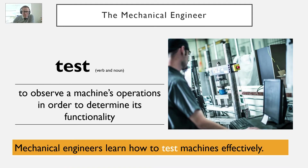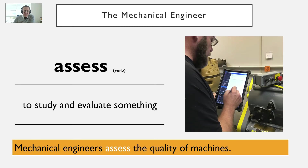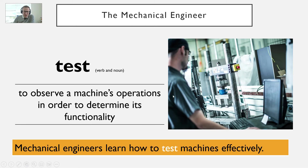Test. This can be a verb and a noun. It means to observe a machine's operations in order to determine its functionality. This is a bit more than assess — where you study and check something. Testing is where you actually use tools to see how well it's working. For example, mechanical engineers learn how to test machines effectively.